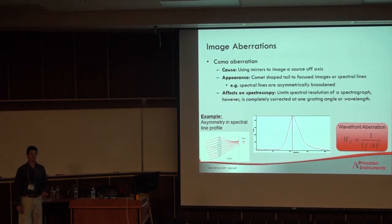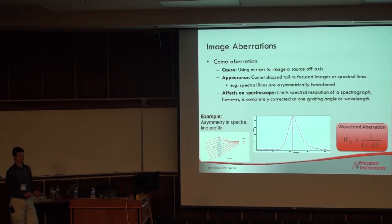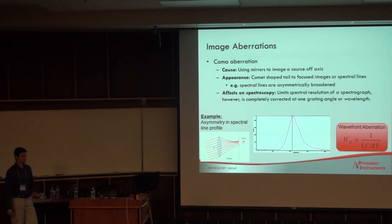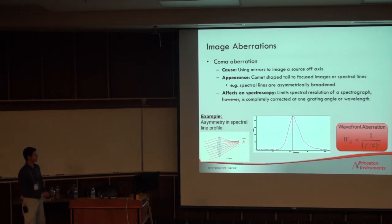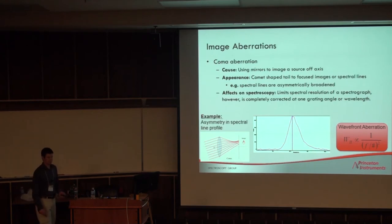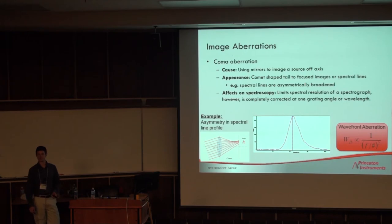Comatic aberration: if you've collected a spectrum of an atomic emission lamp through a traditional Cerny-Turner spectrograph, at some wavelength you probably saw the peak looking asymmetric — that's caused by coma. Coma comes from using any lens or mirror at an off-axis angle, and because we don't punch holes in the mirrors in a spectrograph, we have to use them off-axis — ergo, there's going to be coma.